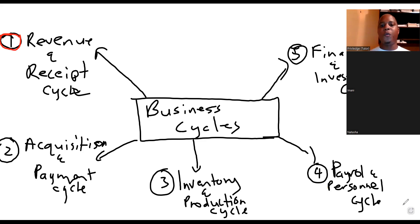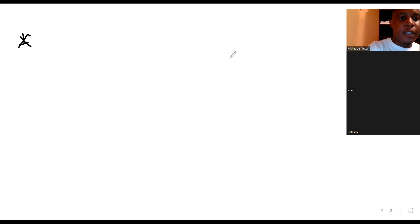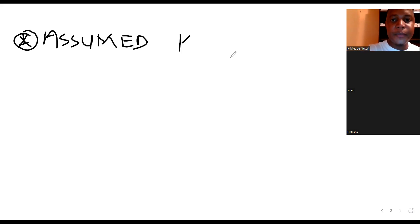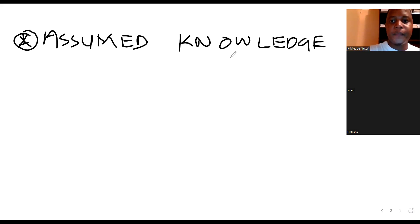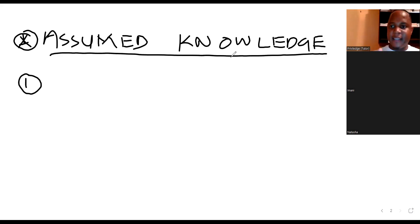Now, our journey for tonight begins here. What is it that you need to know when dealing with cycles — whether it's Revenue and Receipt, Acquisitions and Payment, or Payroll and Personnel? Here are the few important things I call assumed knowledge — these are things you are expected to know when it comes to any business cycle. Number one: when dealing with a business cycle, you need to understand what the functions in place are, also known as phases within that cycle.